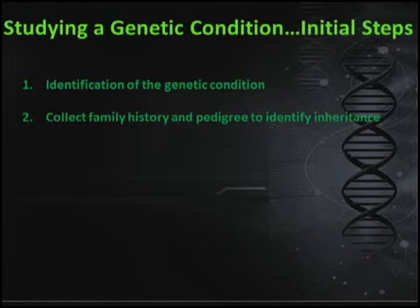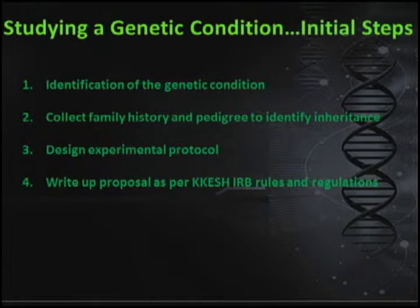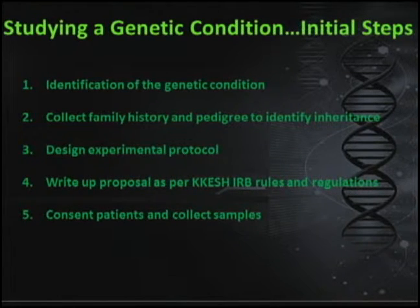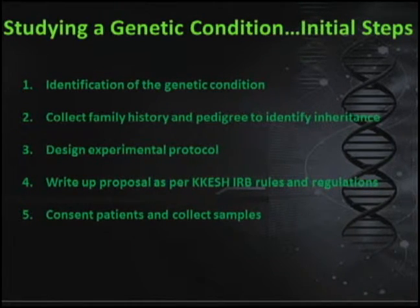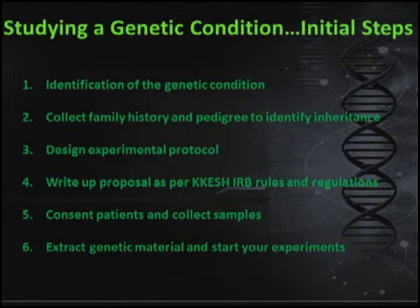We then collect family history and pedigree to identify inheritance in these cases. We design the experimental protocol and write up the project proposal based on KCASH IRP rules and regulations. We consent patients and collect samples — in most cases we collect DNA from blood, but we can collect from any tissue we're interested in. Then we extract the genetic material and start our experiments in the lab.